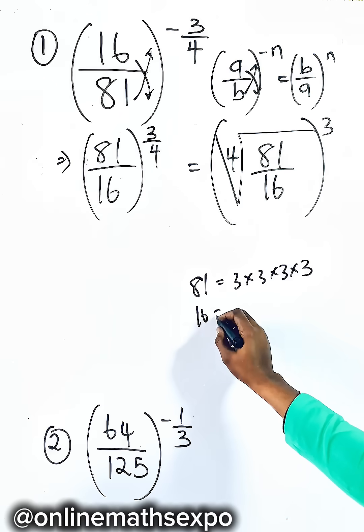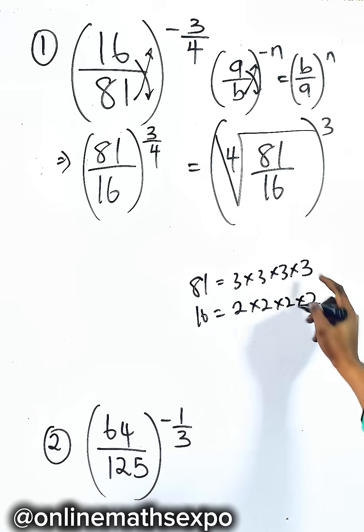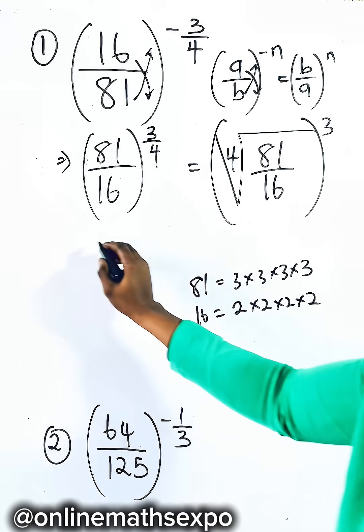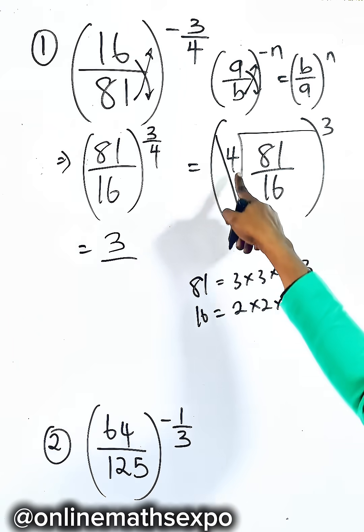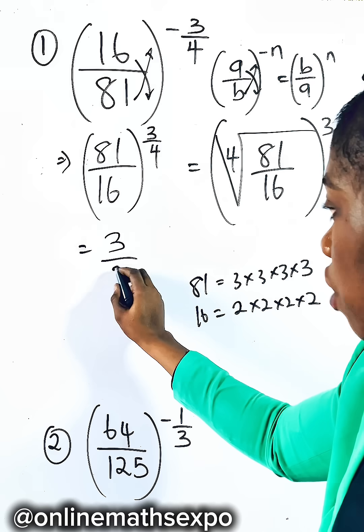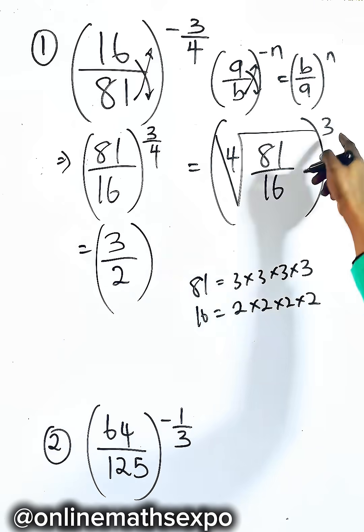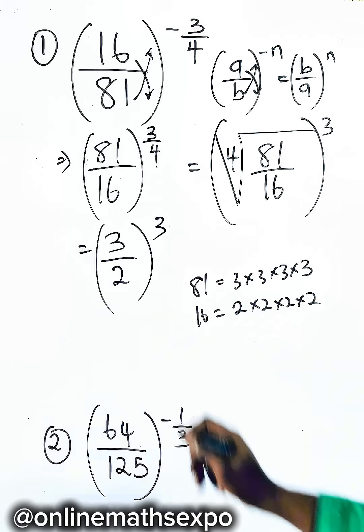So the fourth root of 81 gives us 3, and the fourth root of 16 gives us 2. So you are dividing 3 by 2.